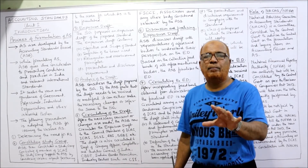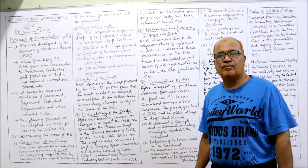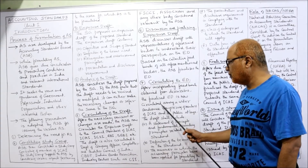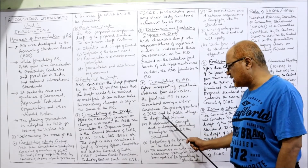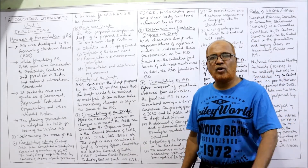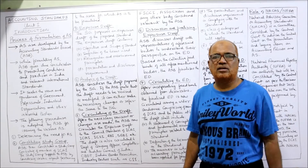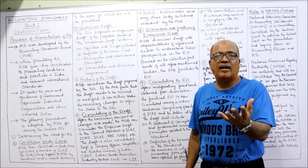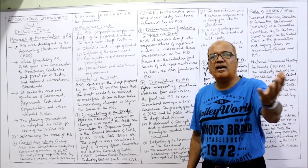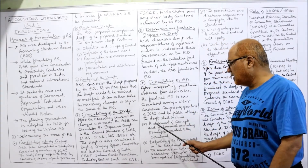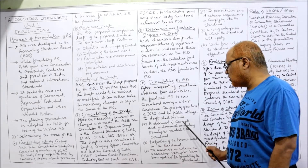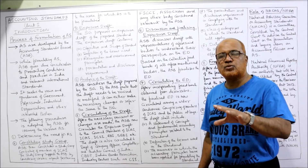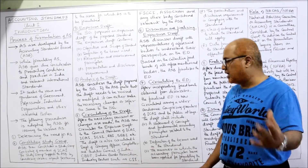The seventh step is circulating the finalized exposure draft to a wider audience. After incorporating the feedback obtained from discussions, the finalized ED is now circulated among a wider audience comprising members of ICAI and the public at large. The exposure draft should include: a statement of concepts and fundamental accounting principles related to the standard, and definitions of the terms used in the standard.